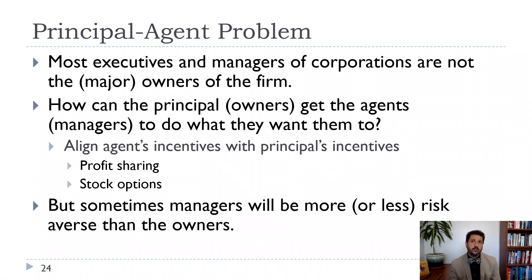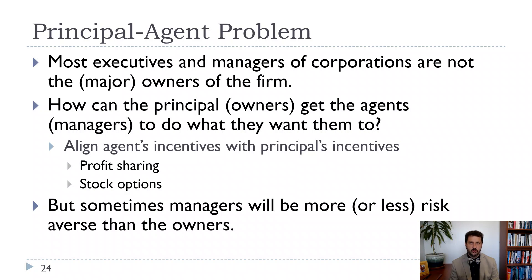One of the things we'll talk about in this class is the principal-agent problem. In terms of firms, the problem is that the agents — the ones actually making decisions, usually executives and managers — are not the same as the principals, or the owners of the firms. How do the owners get the agents to do what they want? If you major in business or get an MBA, you'll spend a lot of time thinking about executive and manager compensation. Things like profit sharing and stock options are a way to align the principal and agent's interests. You can extend this all the way down to profit sharing for everybody in the firm, and at the extreme, an employee-owned firm where the principal-agent problem basically goes away.